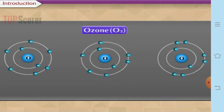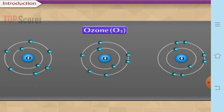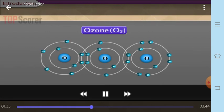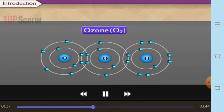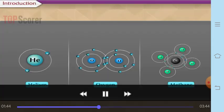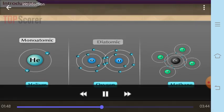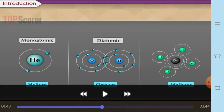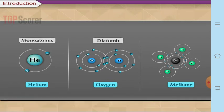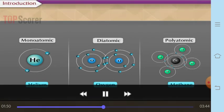So these are some of the types of molecules of elements as well as compounds. Now let us move further to answer the next question: what is meant by valency of an element? You can see all the different types of molecules — monoatomic, diatomic, and polyatomic. Triatomic is in the case of ozone.